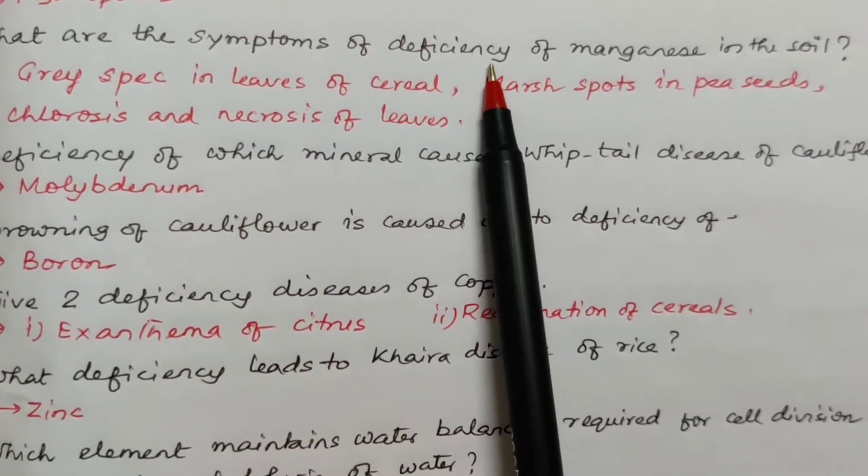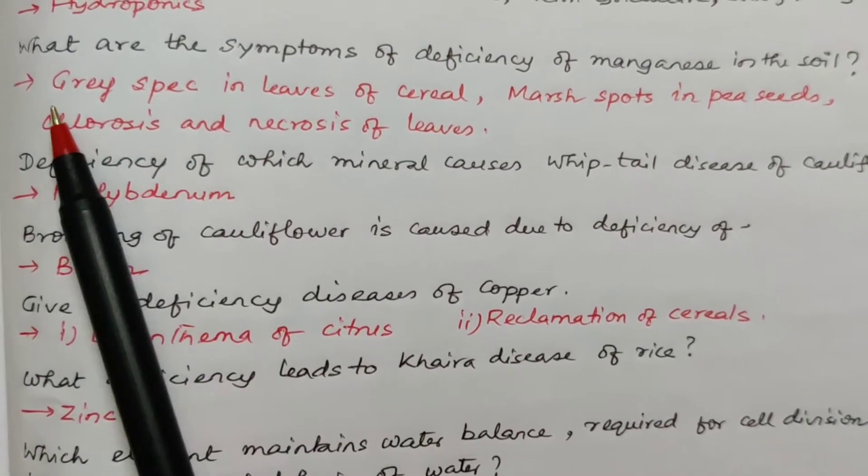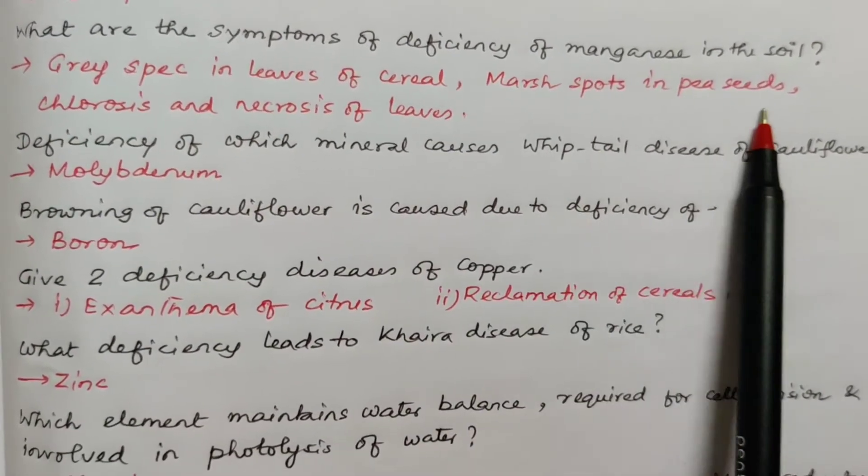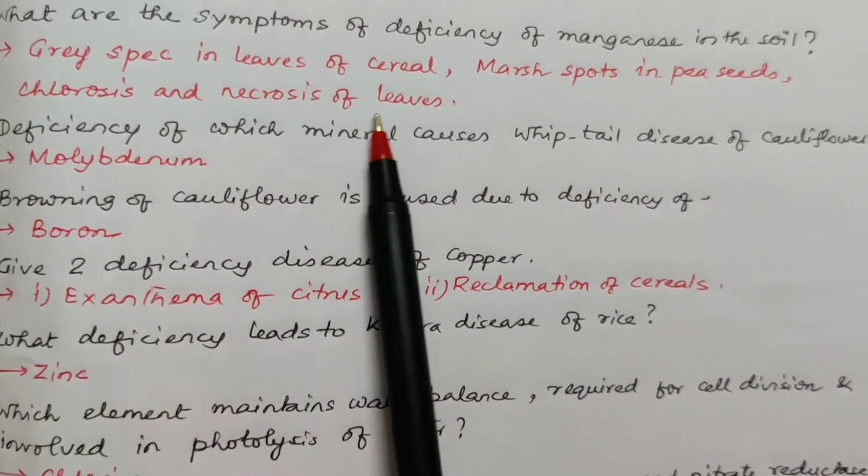What are the symptoms of deficiency of manganese in the soil? Gray speck in the leaves of cereal, marsh pot in pea seeds, chlorosis and necrosis of leaves.